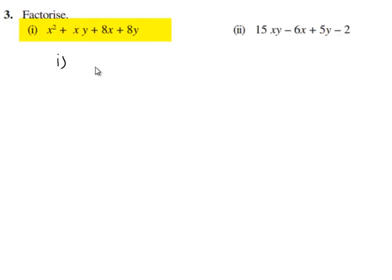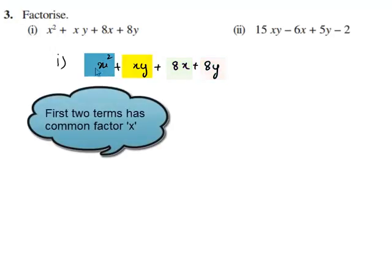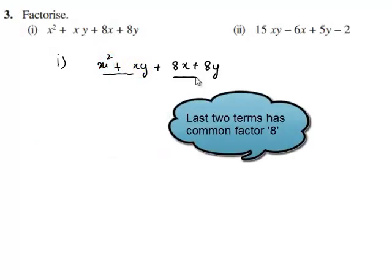Here the given expression is x squared plus xy plus 8x plus 8y. We find that there is no common term in all four terms, but the first two terms have x as common and the second two terms have 8 as common.